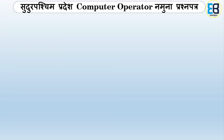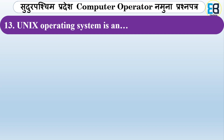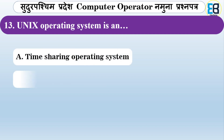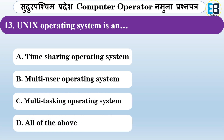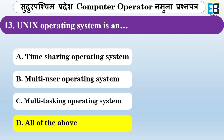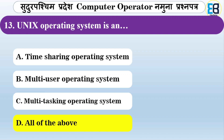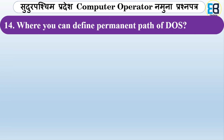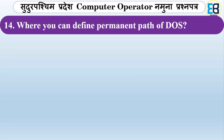Unix operating system is considered what type of operating system? Options are time-sharing, multi-user, multitasking, or all of the above. The correct answer is all of the above — Unix is a time-sharing, multi-user, and multitasking operating system.